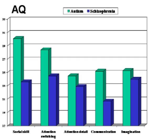Now for the results. On the AQ, in social skill, the differences are quite large and very significant. Individuals with autism report much more problems in social skills and social behavior — they feel less socially able than individuals with schizophrenia. In attention switching, there is also a significant difference, with individuals with autism reporting more problems. Attention to detail and imagination did not lead to significant differences. But in communication, the difference was significant, with more problems reported by individuals with autism.